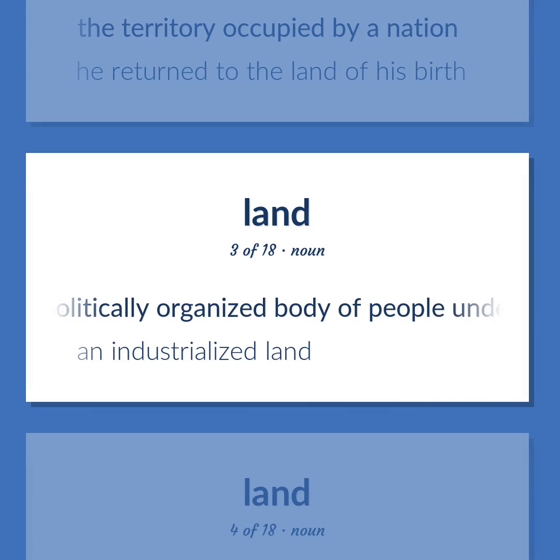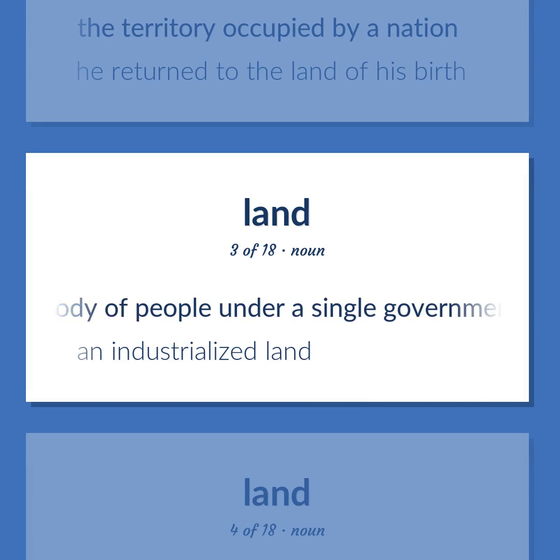Land: a politically organized body of people under a single government. An industrialized land.